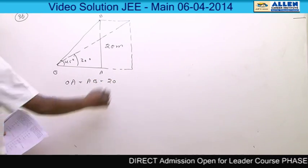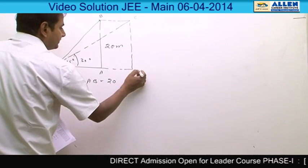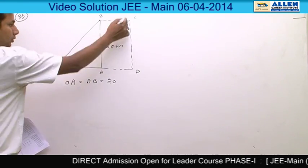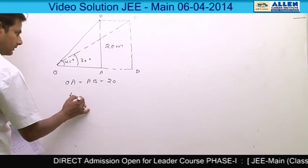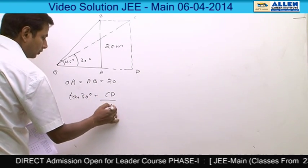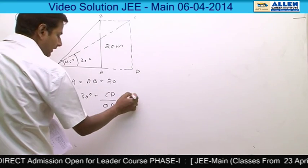Now if we consider this point as C and D and apply tan rule in triangle OCD, tan 30 degrees is equal to CD upon OD. CD is equal to AB, which is 20 divided by OD.